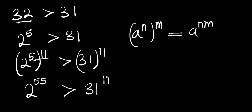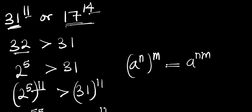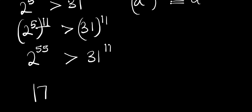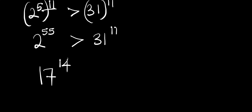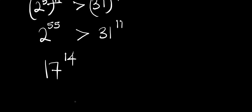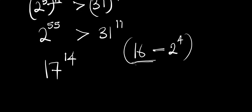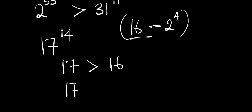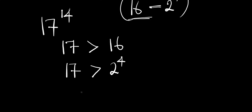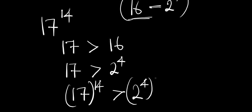Now let's also consider the other number. Here we have 17 to the power of 14. I will also make use of the next available even number, and that will be 16, because I can express 16 in index form as 2 to the power of 4. Now 17 is actually greater than 16, meaning that 17 is greater than 2 to the power of 4. So it simply means 17 to the power of 14 is greater than 2 to the power of 4, all to the power of 14.